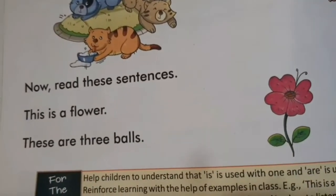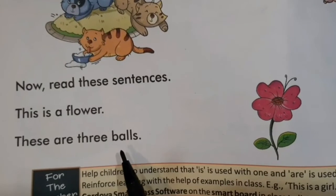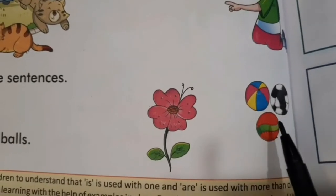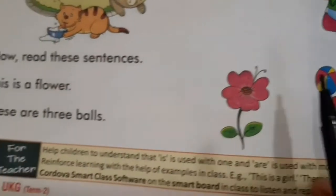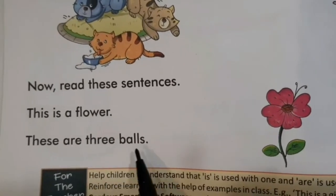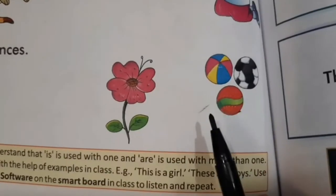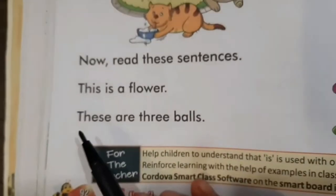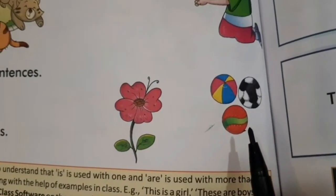Aur next sentence mein likha hai: 'These are three balls.' Dekho, yeh haan peh kitne balls hain — one, two and three. Kitnay balls hain? Three balls hain. Toh yeh haan peh is liye likha hai 'These are three balls.' 'Are' use kiya hai kyunki yeh zyada hai, one se more hai. Aur 'these' bhi is liye use kiya hai kyunki yeh haan peh one se zyada hai.